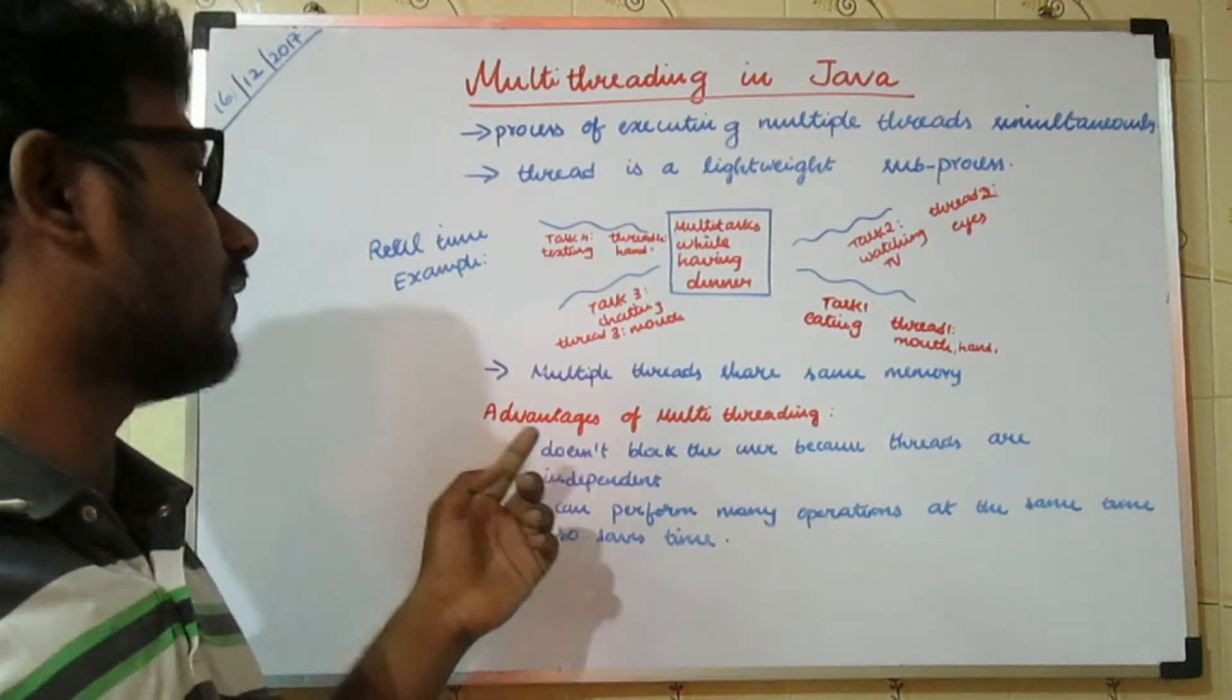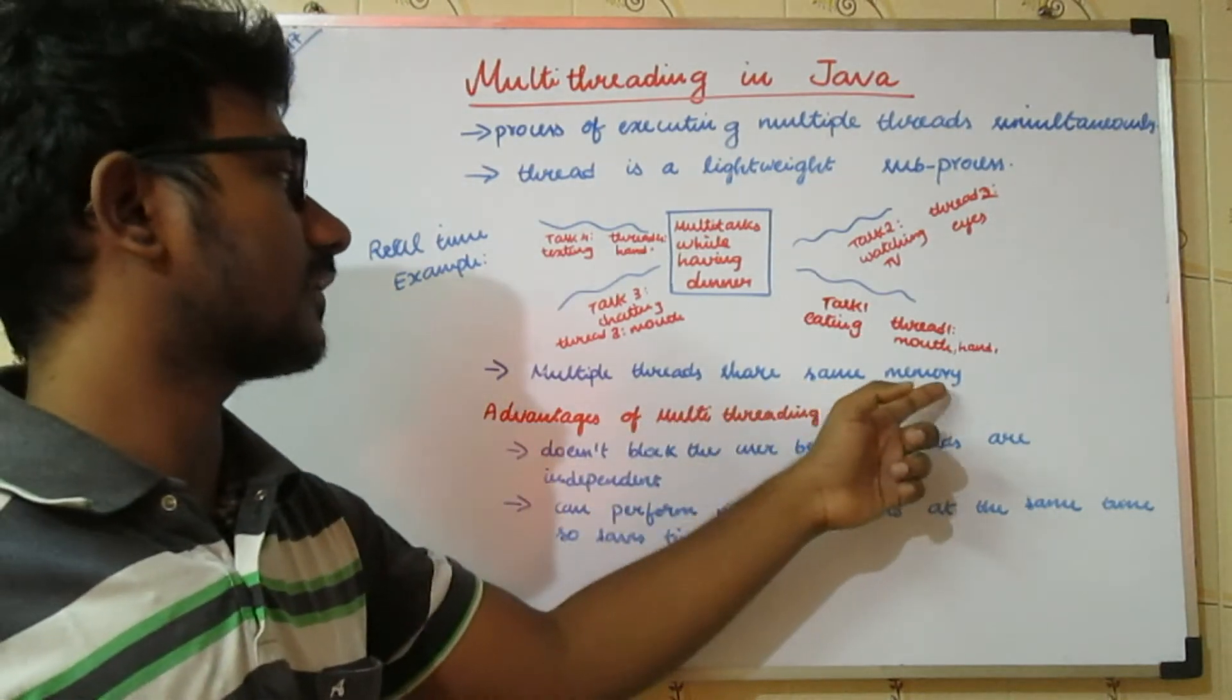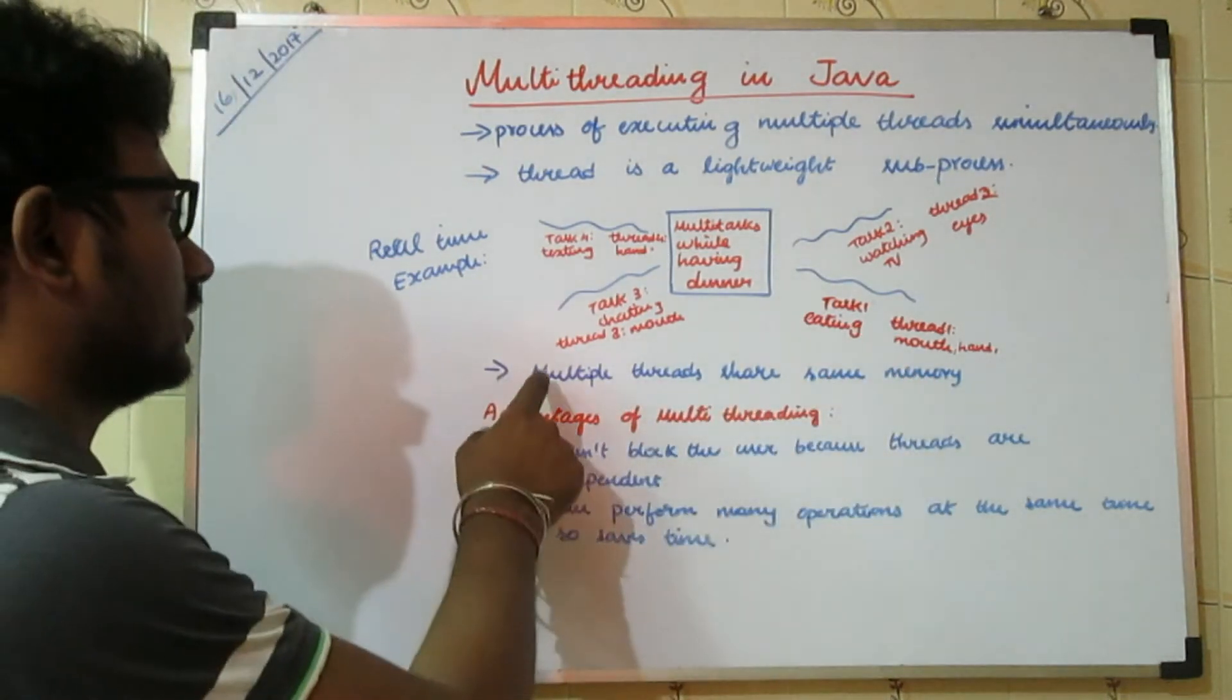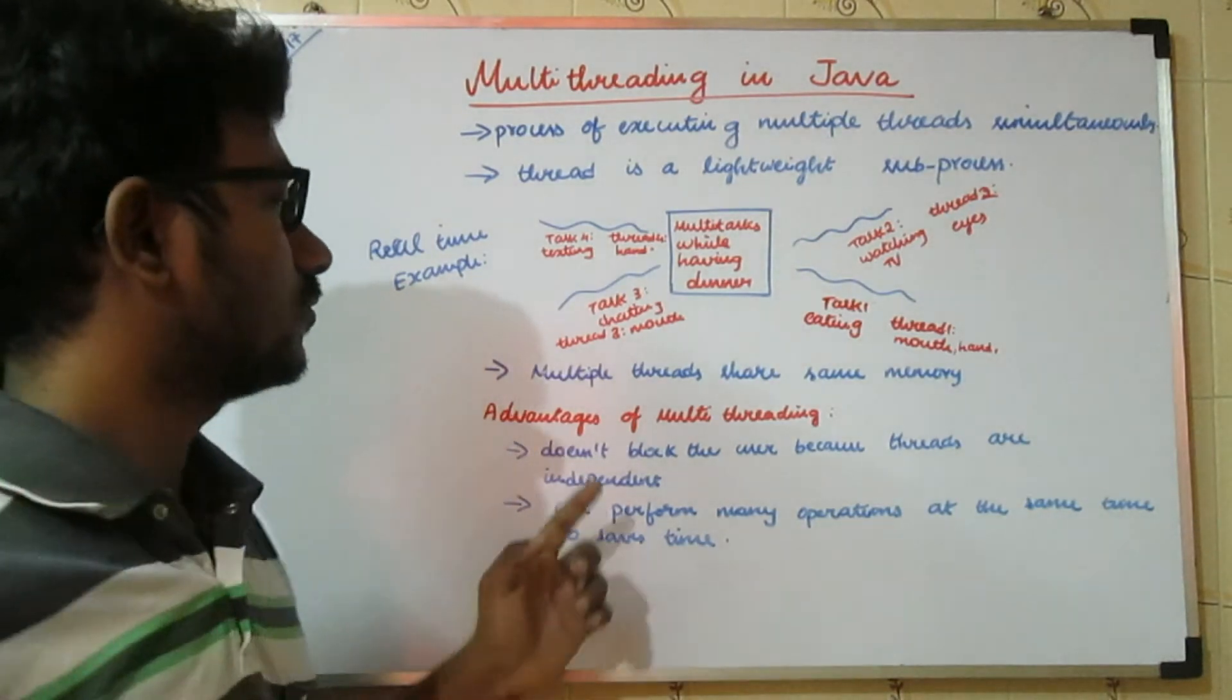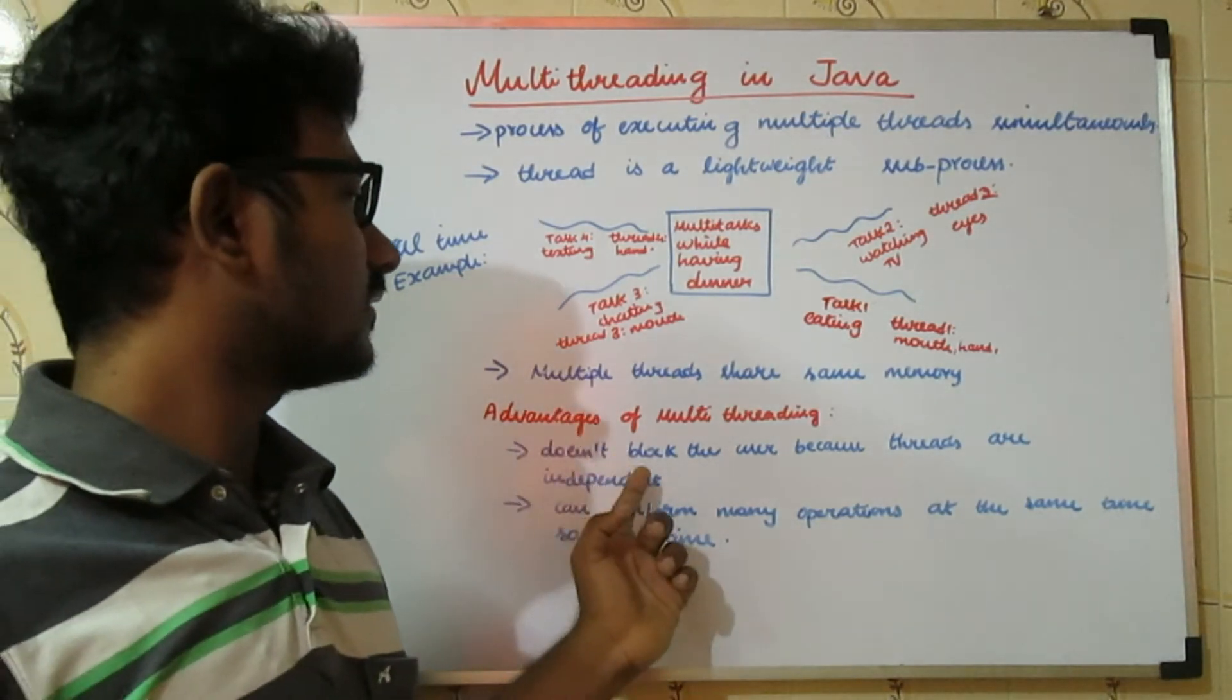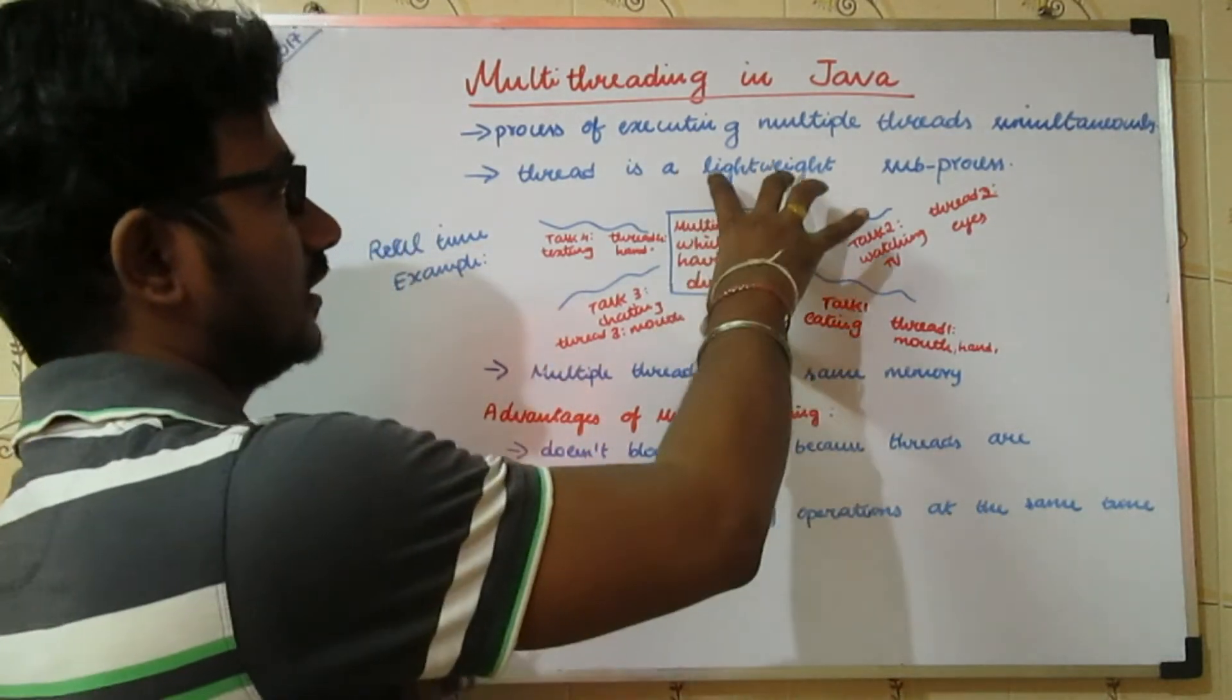Now we'll discuss the advantages of multithreading. This is also one of those examples - I have misplaced this here; actually it should be placed in this position. The first example is: it doesn't block the user because multithreads are independent. Consider this example.